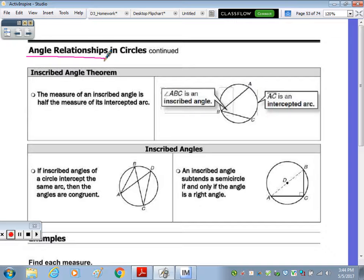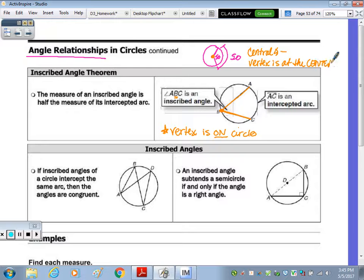The first is an inscribed angle, so this is different from the central angle. Central angle, the vertex was on the center, and its measure was the same as the arc. So if this was 50 degrees, the arc is also 50 degrees, because the vertex is at the center. Looking at an inscribed angle, okay, let's look at the picture first. ABC is an inscribed angle, B, since that's in the middle, is the vertex, let's put a big dot there. The vertex is on the circle. Where for a central angle, the vertex was at the center.